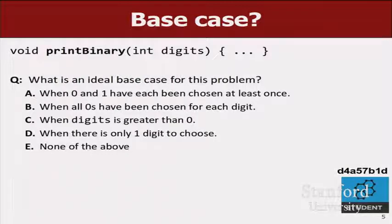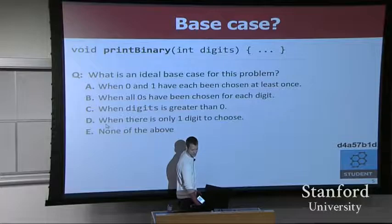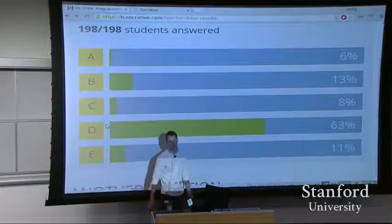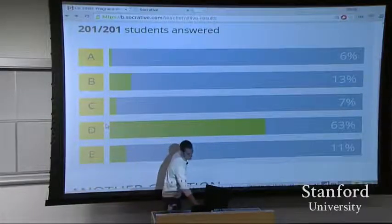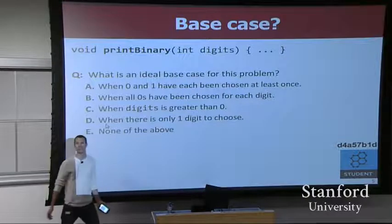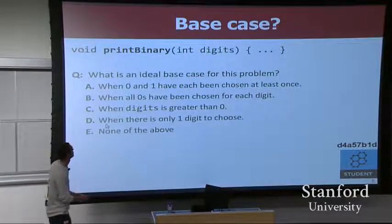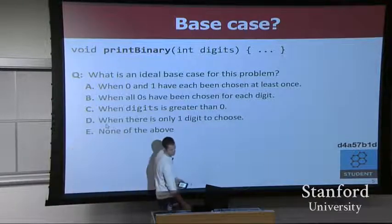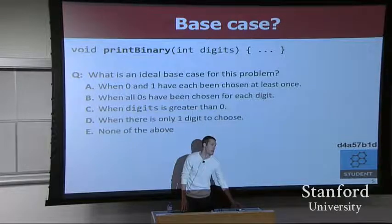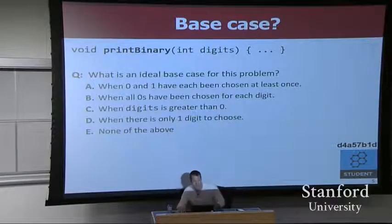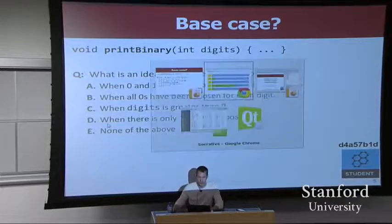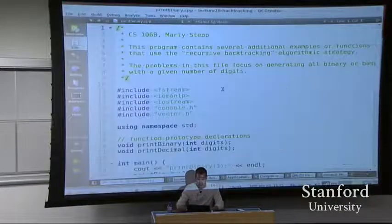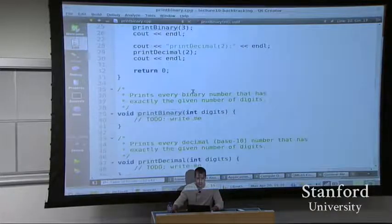The most common answer was D by a pretty large margin. D is the one that says there's only one digit left to choose. So let's write it using that base case - since you're telling me that's what you want, let's go try to do it. I've got a print binary file here and we're going to go down and write it.